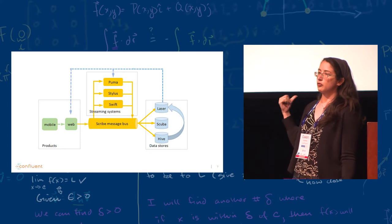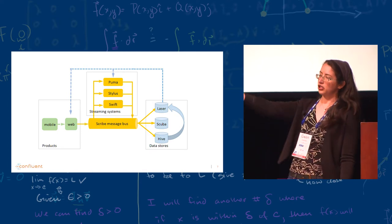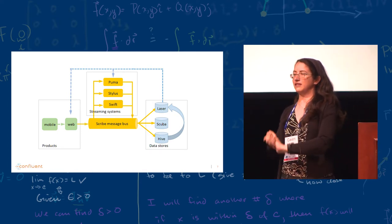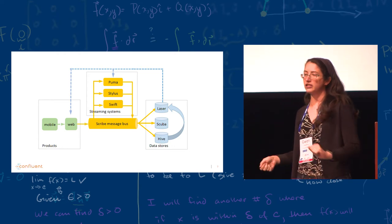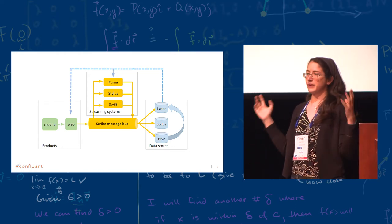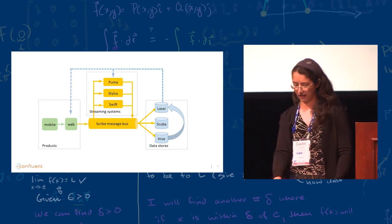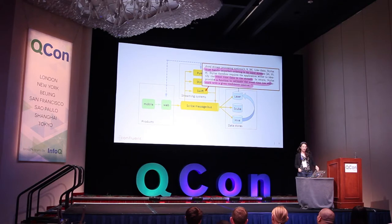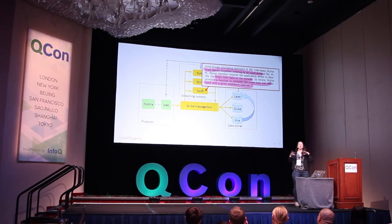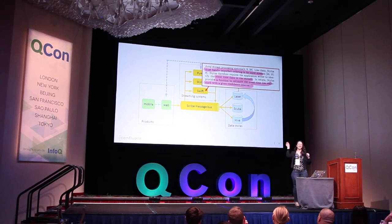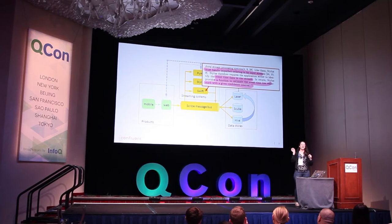They also write data to SCUBA, their metric monitoring. Charity up front is going to talk about it next. So I'm not going to spend any time on it. And they have Hive, which is basically a huge data warehouse, which is pretty terrible.